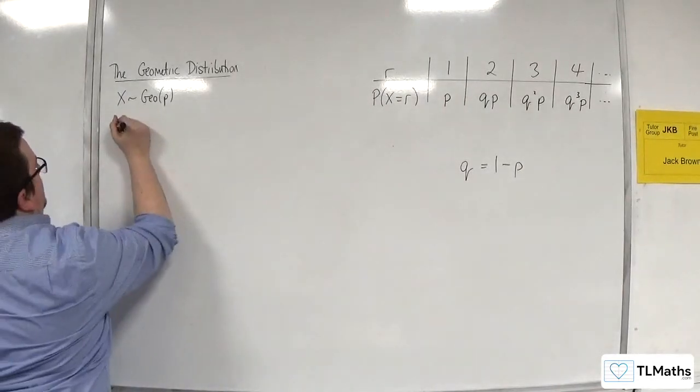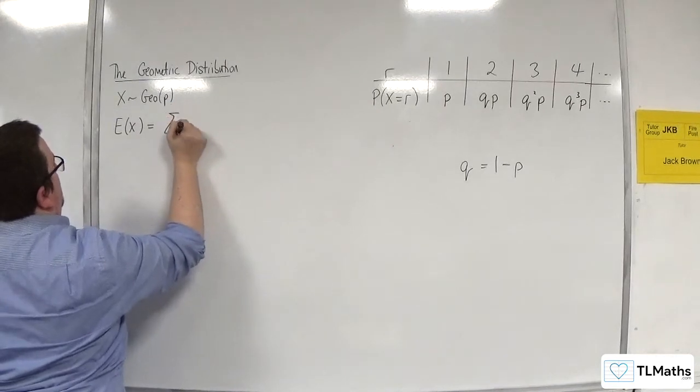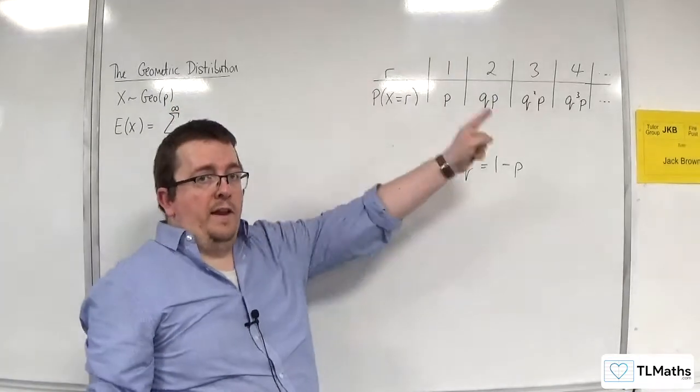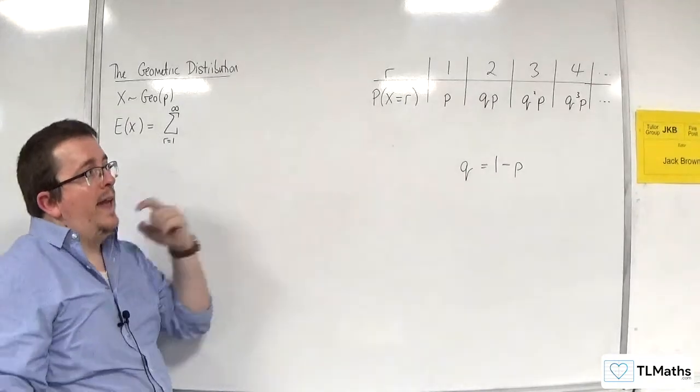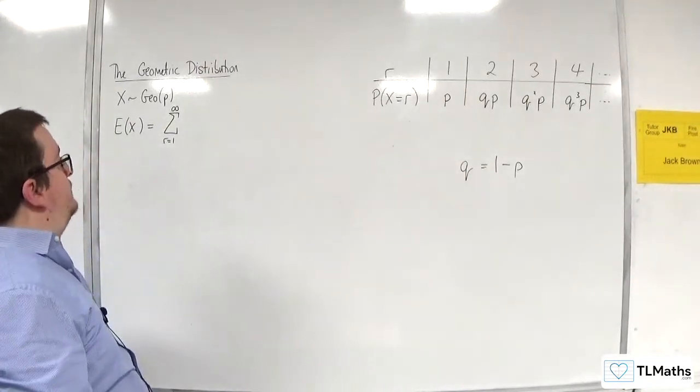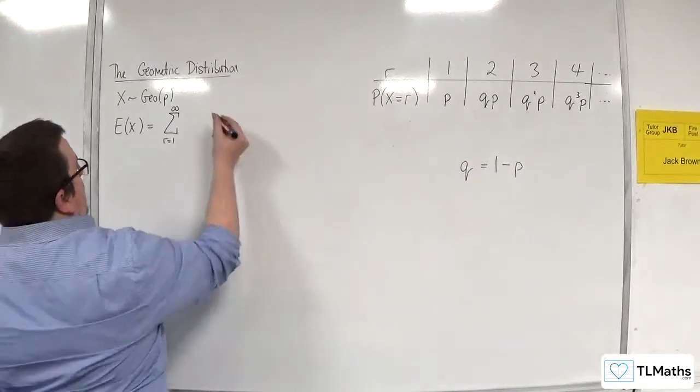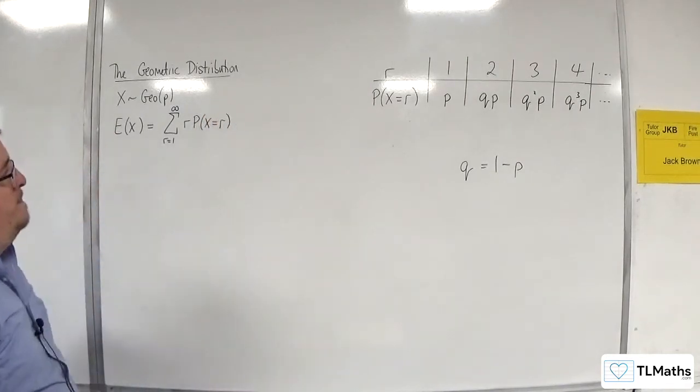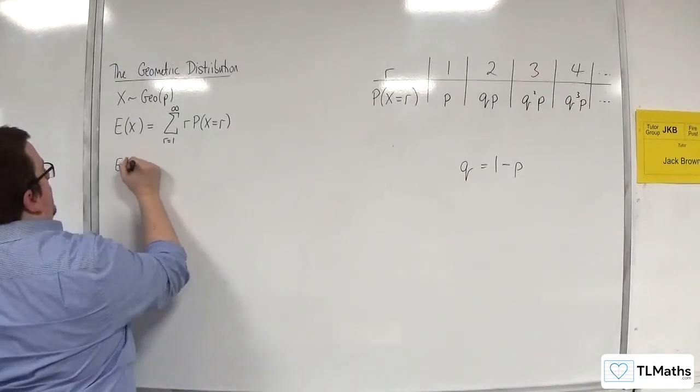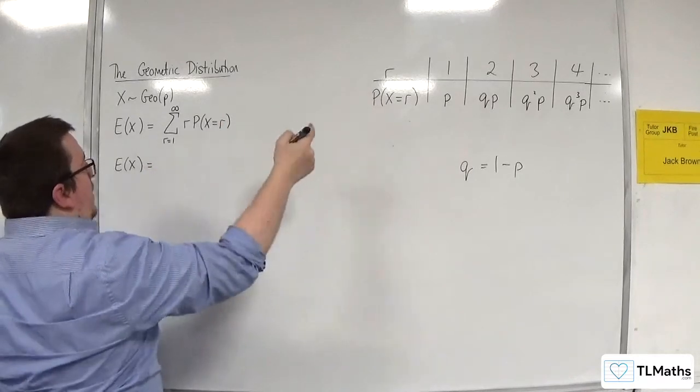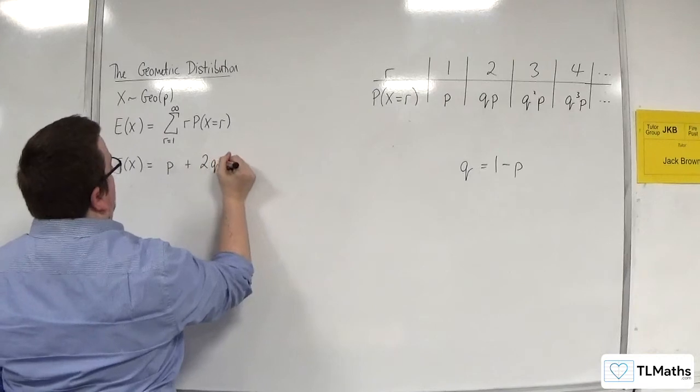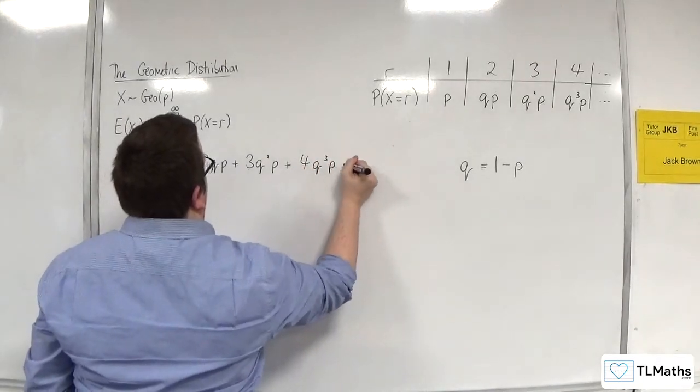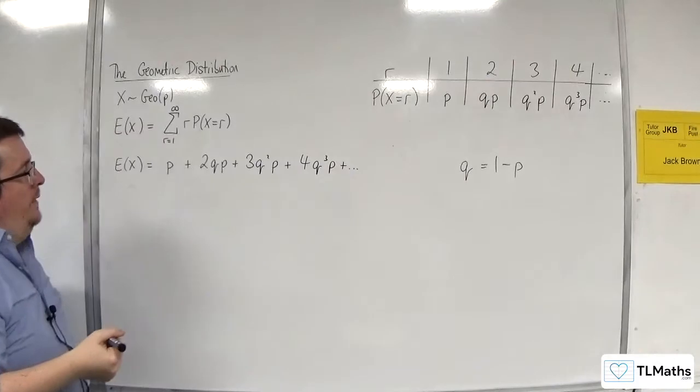So, if I was to find E(X), this would be the sum from r equals 1 to infinity, because unlike the binomial distribution, there is no cap on what n can be, so that just keeps on going. And you get your values of r and multiply them by their respective probabilities. Okay, so E(X), using our table, would be 1 times p plus 2 times qp plus 3 times q squared p plus 4 times q cubed p, etc. And that would be an infinite sum.